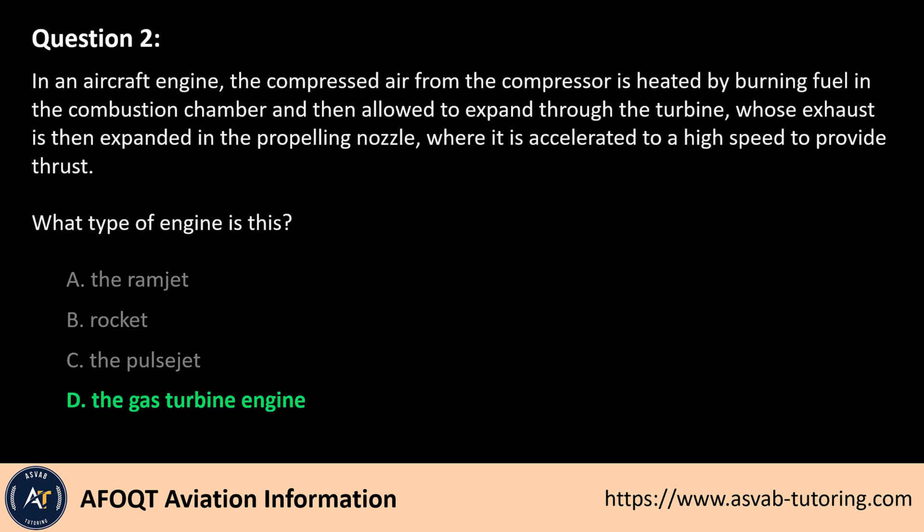The answer is D. A gas turbine engine operates by compressing air, mixing it with fuel for combustion, and then expanding the hot gases through a turbine and nozzle to produce thrust. This process is characteristic of jet engines, including turbojets and turbofans. Ramjets, rockets, and pulsejets operate differently and do not use a compressor turbine system. Thus, the described engine is a gas turbine engine.